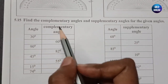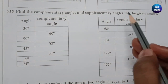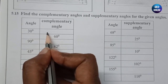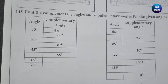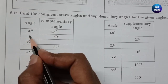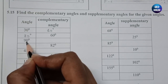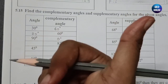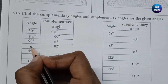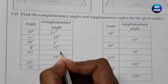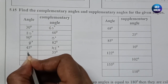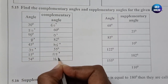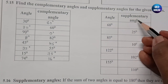Find the complementary and supplementary angles for the given angles. For 30°, the complementary angle is 60° because 30 + 60 = 90. For 90°, there is no complementary angle — it would be 0°. For 45°, complementary is 45°. For 55°, complementary is 35°. For 15°, complementary is 75°. For 74°, complementary is 16° because 16 + 74 = 90°.